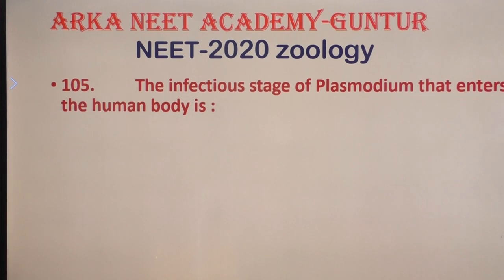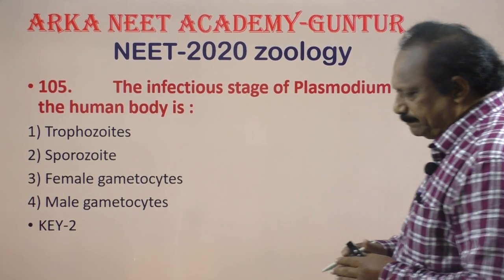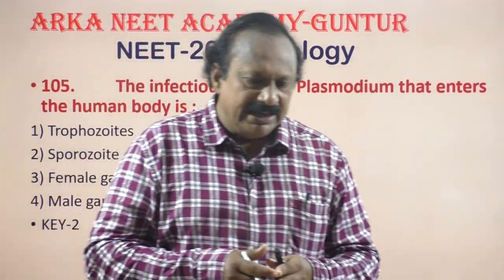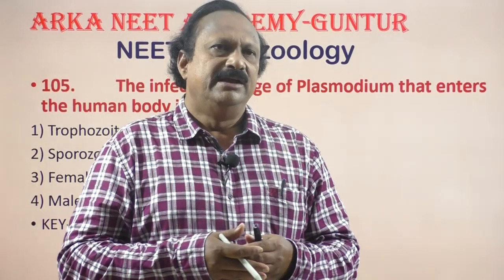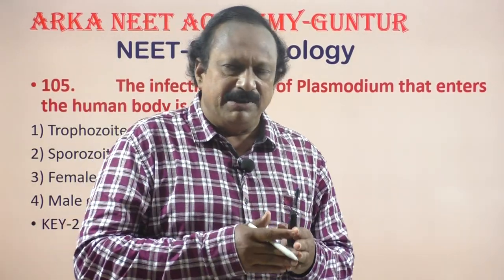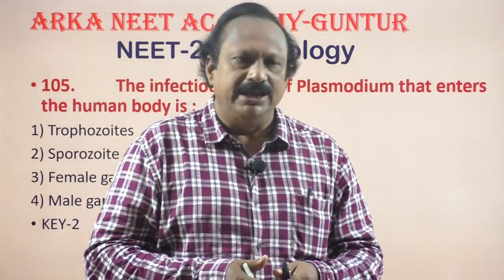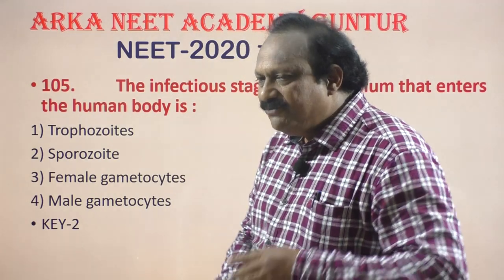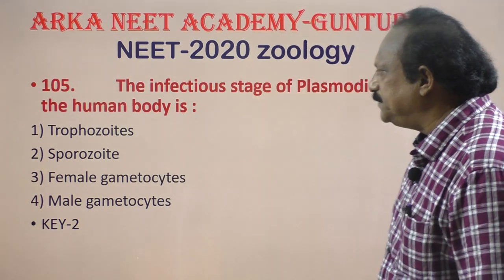The infectious stage of Plasmodium that enters the human body: when a female mosquito sucks the blood of a healthy man, it releases sporozoites into the bloodstream. The sporozoites remain in the blood for half an hour, then move into the liver to start the life cycle. Therefore, the infectious stage of Plasmodium to man is the sporozoites.